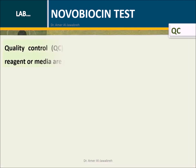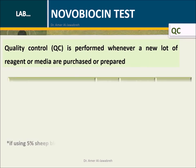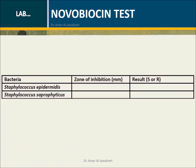Quality Control: QC is performed whenever a new lot of reagent or media are purchased or prepared. Listed below are ATCC bacteria and their expected results. Use the provided table to report results.